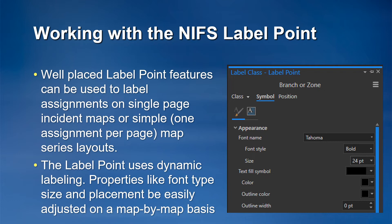Well-placed label point assignment features can be used by multiple users across multiple map layouts. Because the label points are labeled using dynamic labeling, certain adjustments can be made to the label point labeling properties, such as symbol size and offset position, that can allow for some map-by-map adjustment of label point features.